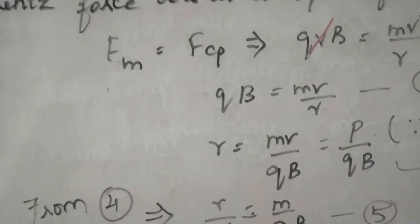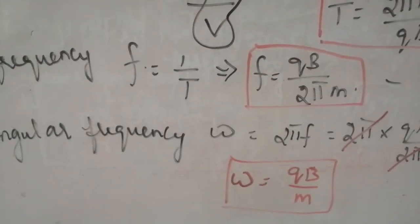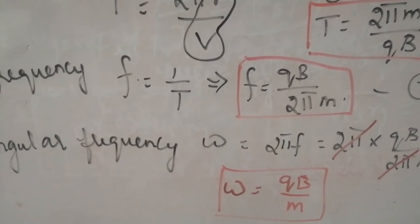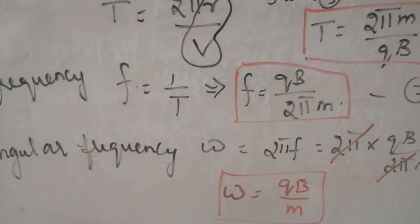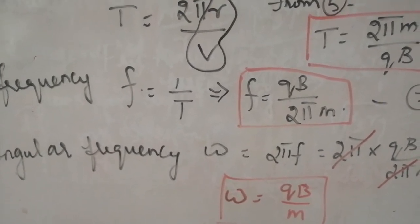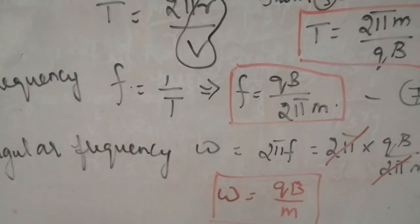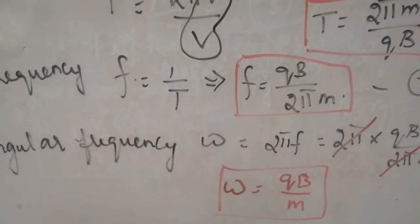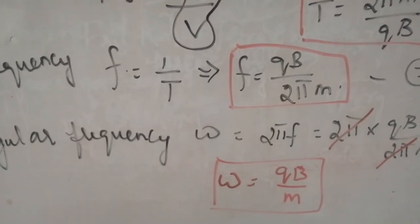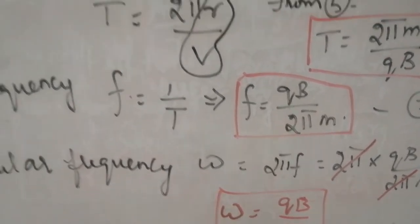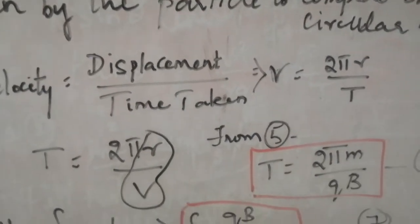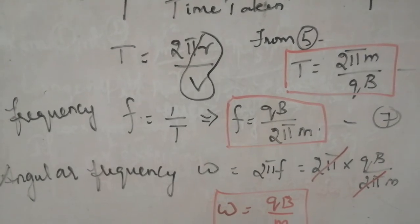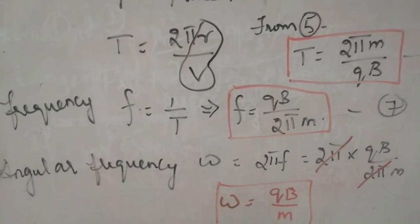So this is all about the motion of the charged particle. So from the equations we have derived, you can see that frequency depends on the charge and the magnetic field and the mass of the charged particle. So it does not depend upon the path traveled and it does not depend upon the radius of the circle. How much ever the radius may be, it does not depend upon that. So the frequency and the time taken by the particle, all these things depend only on the charge and the magnetic field and mass. It does not depend upon the radius.